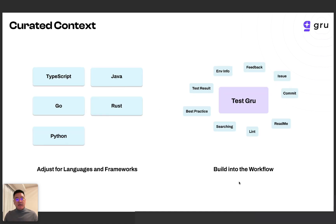Building context in agents is really important, and we think it's necessary to build context for specific tasks. For example, for unit tests, we build context for each of the languages and frameworks. We also gather all information from the environment — for example, GitHub issues, code reviews, commits, pull requests, readme, and the code itself. All this information needs to be gathered, filtered, and selected to fit into the context.